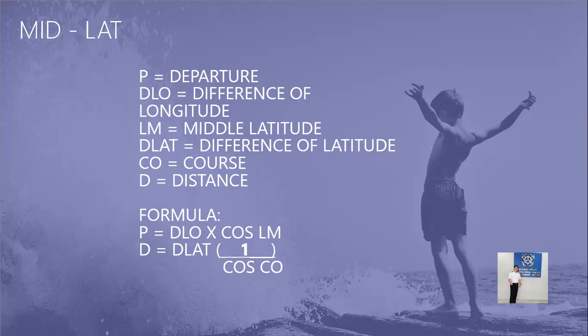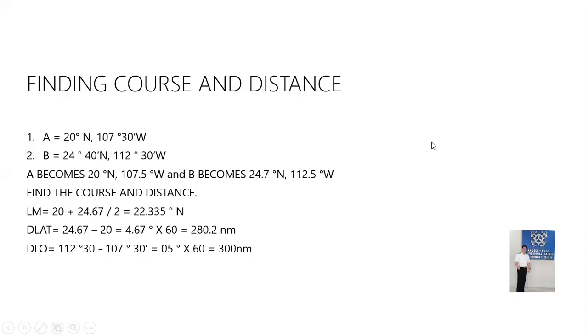With a given problem, the things you are going to find are course and distance. In other cases, if course, distance, latitude A, and longitude A are given, you also have to find latitude B and longitude B, which are your arrival coordinates. You can screenshot that and copy it into your notes.